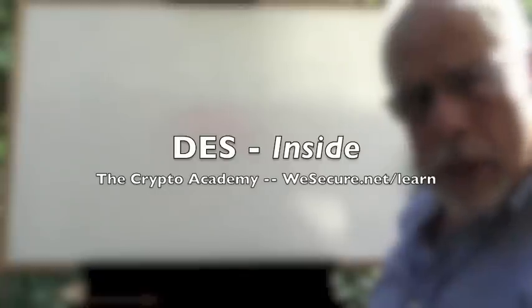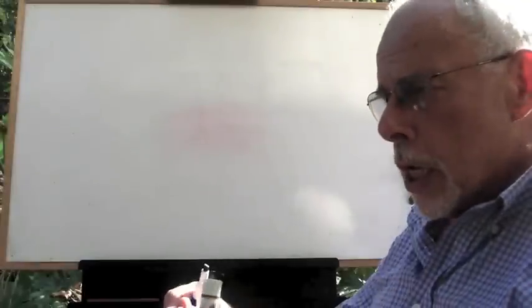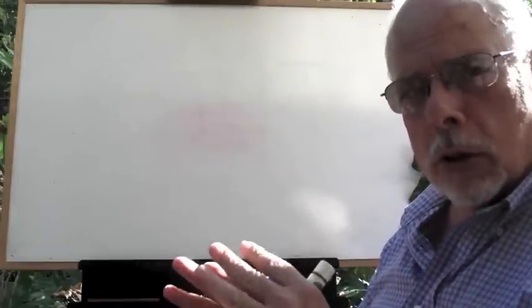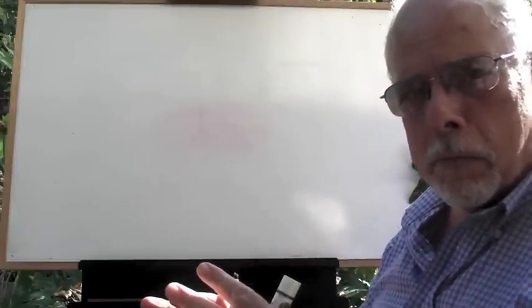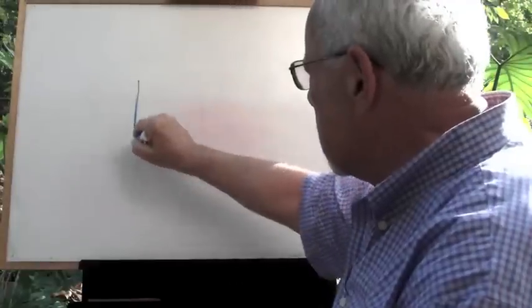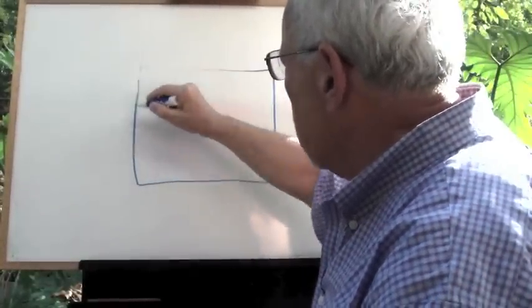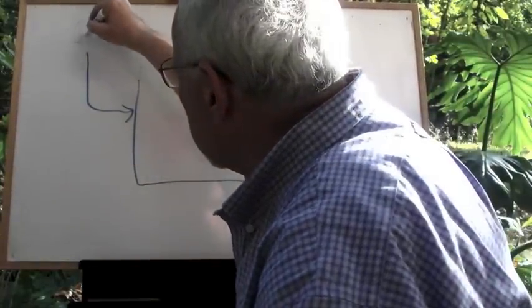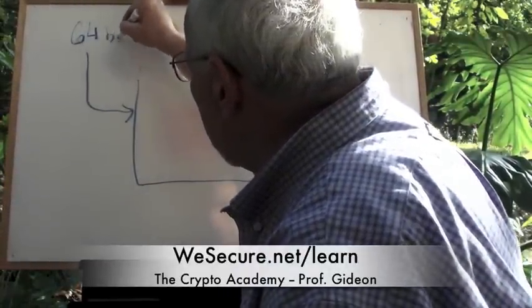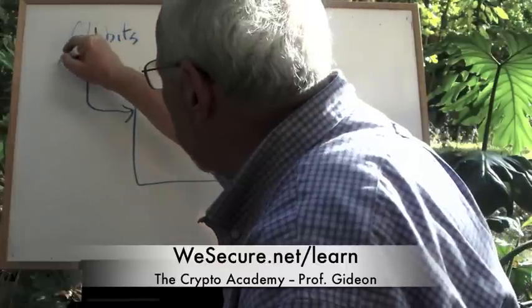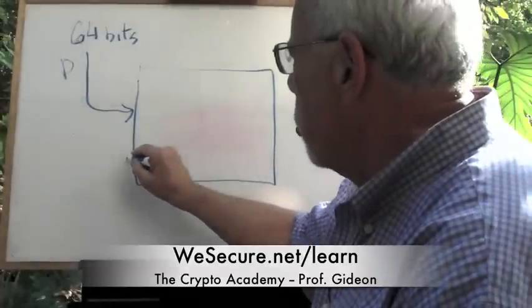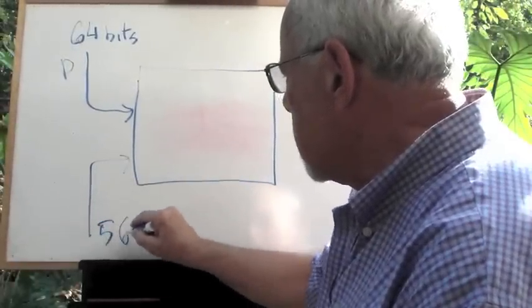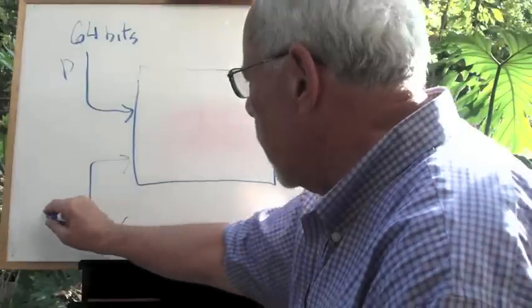Let's see what happens if we pry open this box called DES. When the box is closed, we know that we put here 64 bits that are a block of plaintext P. We put here 56 bits that are the key.